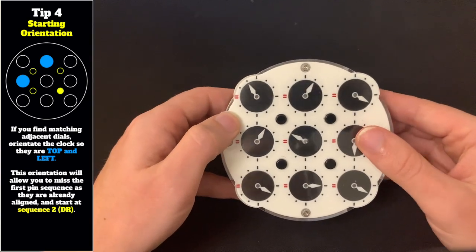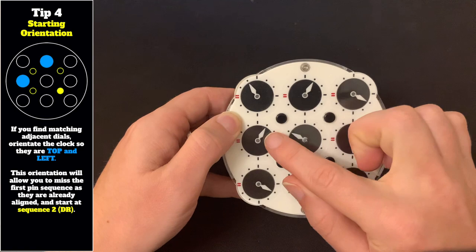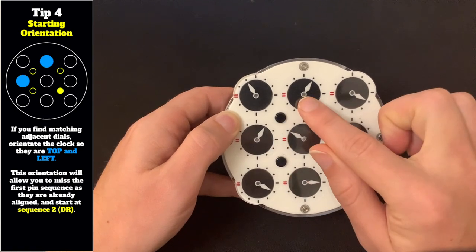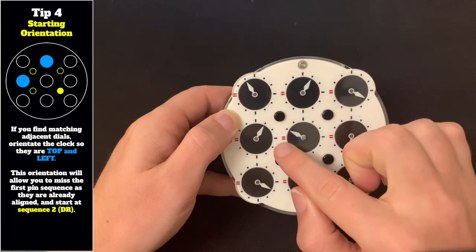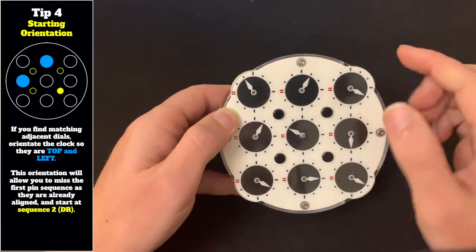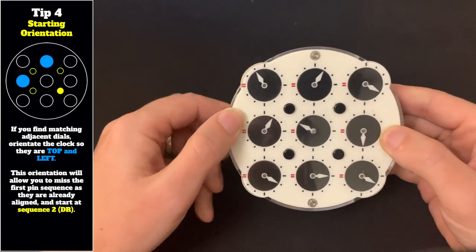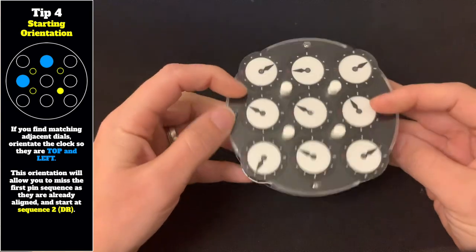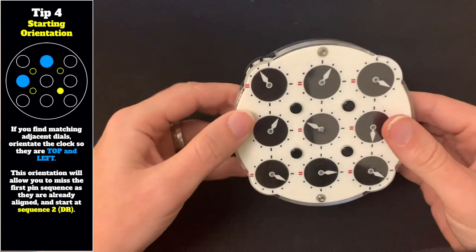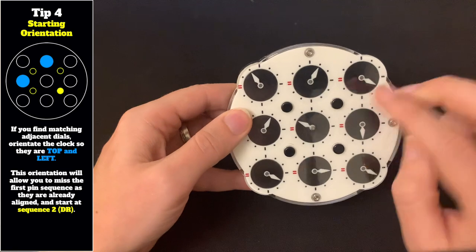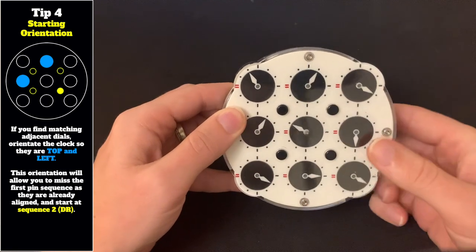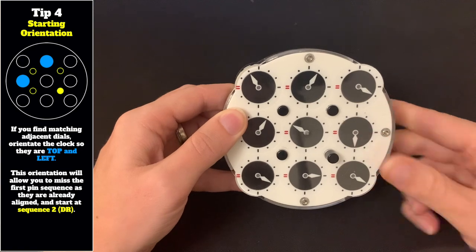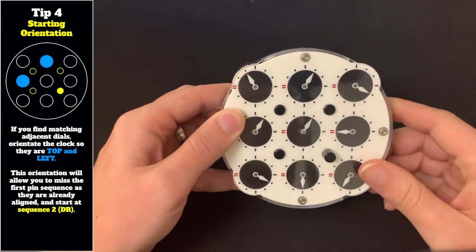If your starting position was the two adjacent dials, you would start it at the top and the left. And always remember which way you're going to finish. So this would be to point all the dials on the left at the 9 o'clock position, and the same when we flip. So if you start with these two, you miss the first pin sequence because they are already aligned. That's one skip. So you would start with this one and have three aligned straight away.